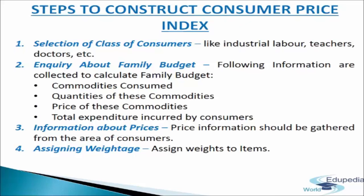Each of these major groups is further subdivided into smaller groups called subgroups. For instance, the group food may be subdivided into cereals, pulses, milk and milk products, fruits, vegetables, etc. These subgroups are divided still further so that commodities in each subgroup are individually mentioned. Only those commodities which a group generally consumes are included in the index number.